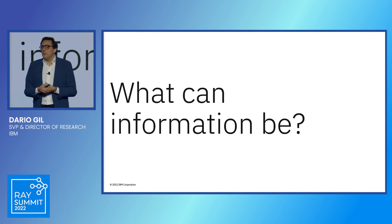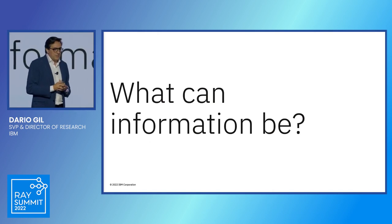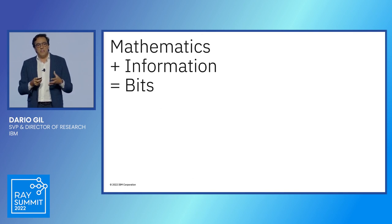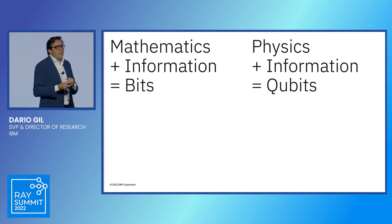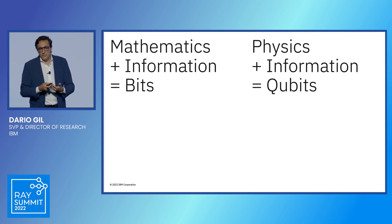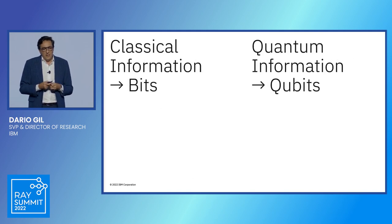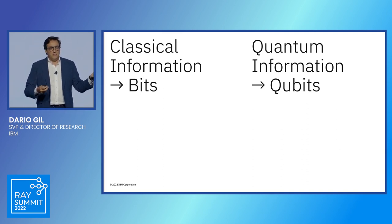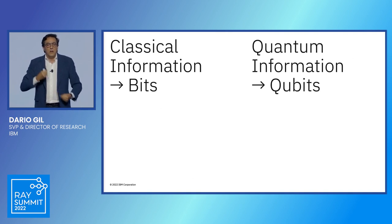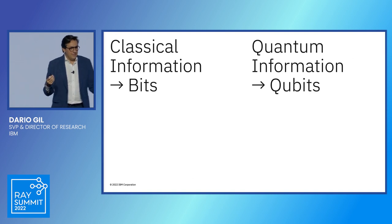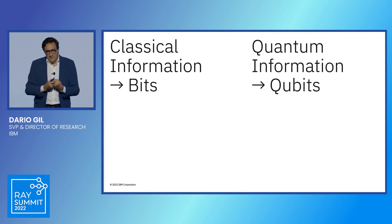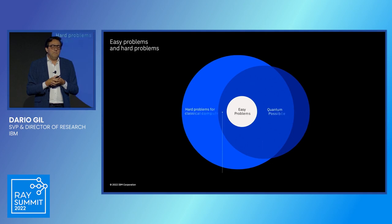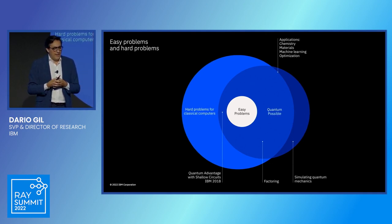But I told you we were going to revisit the question: what is the nature of information? What can information be? If the intersection of mathematics and information gave us the world of bits, we're going to explore how physics and information is going to give us the world of qubits. Therefore, this is the origin of the thesis that the future of computing is going to be classical information and quantum information combined together. Quantum information is not going to replace classical information — they're going to work in concert. And we're going to explore: what is the nature of this quantum information, and how will we combine them? What is the role of Ray in doing that?